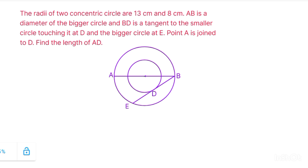In the question it's given that there are two concentric circles, so this is the center of both circles. Let us name it O. The radius of the bigger circle OB is given as 13 centimeter, and the radius of the smaller circle OD is given as 8 centimeter.